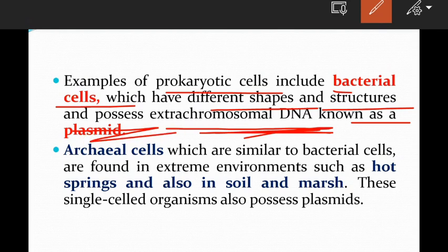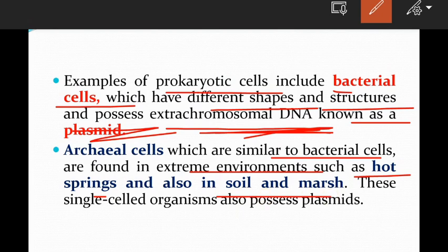Here are the key points of prokaryotic cells: prokaryotes are bacteria, they are single-celled organisms, and they contain extra-chromosomal DNA called plasmid. Archaeal cells are also similar to bacterial cells and are found in extreme environments such as hot springs, soil, and marshy lands. These single-celled organisms also possess plasmids.